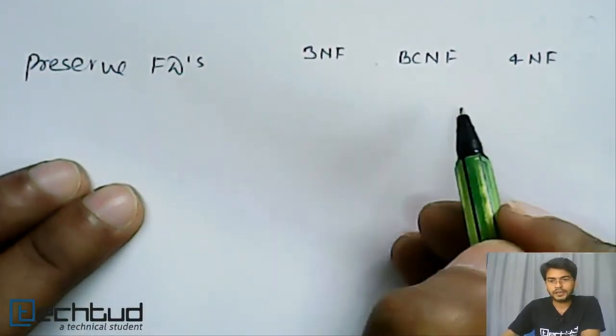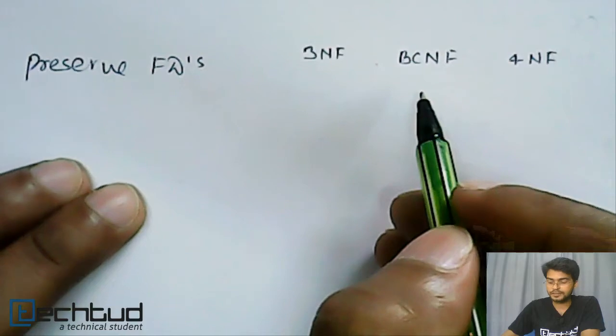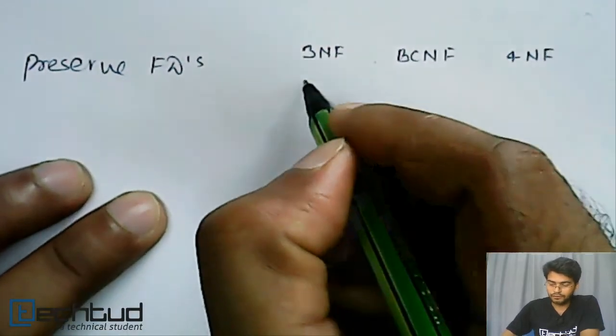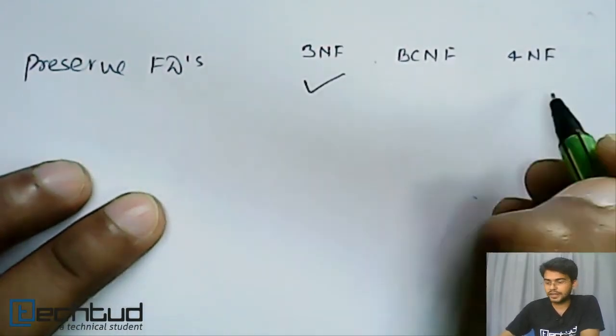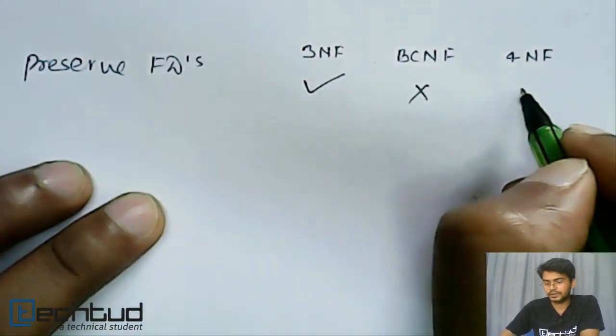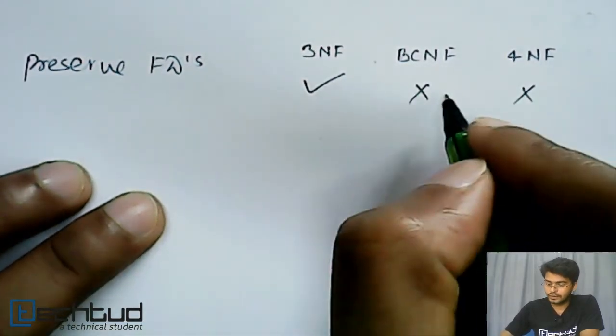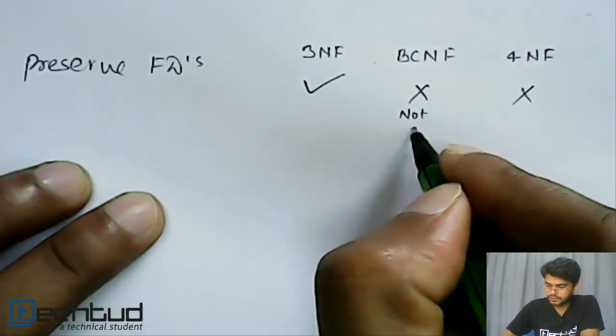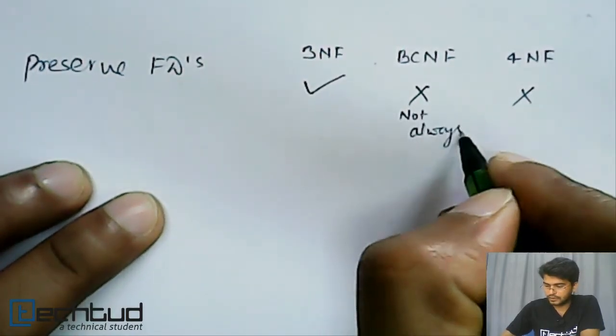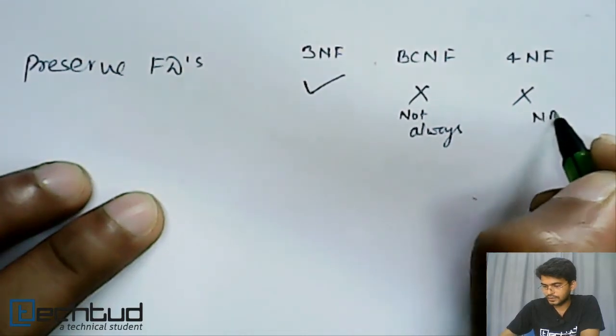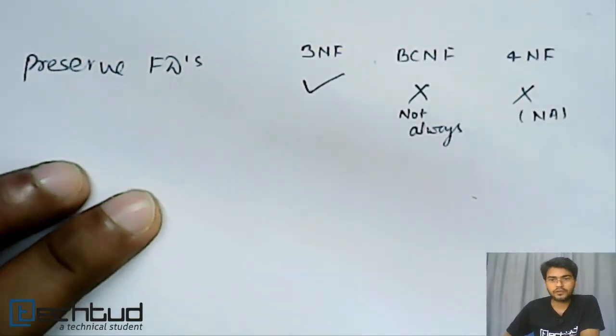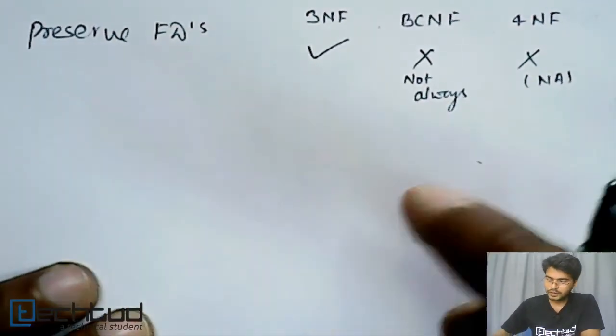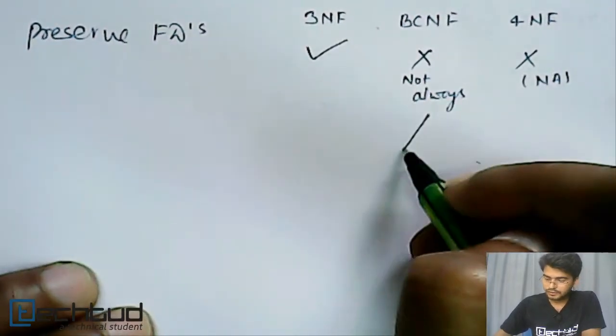Now let's come to another point: functional dependency preservation. Which of the normal forms, after decomposition, also preserve functional dependency? Third normal form will preserve. BCNF and fourth normal form - not always. So rather than cross, we should write 'not always'.